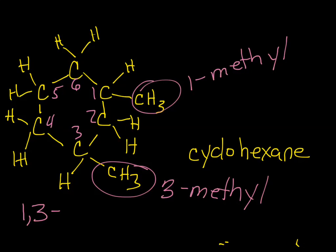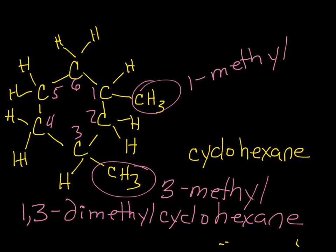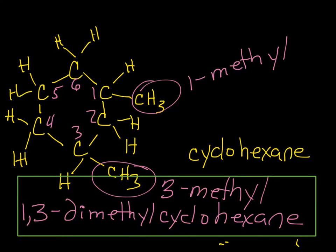So the final name of this guy is one, three, one, three, not methyl, methyl. We've got two methyls. So instead of methyl, methyl, it's di-methyl-cyclohexane. One, three, di-methyl-cyclohexane. So that's how you name cycloalkanes. That's it for today. Have a good one.